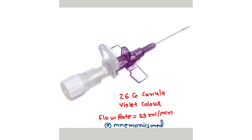This is the 26 gauge cannula — it is violet color and the flow rate is 13 ml per minute. This is the smallest cannula at 26 gauge.